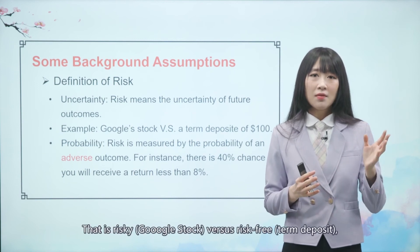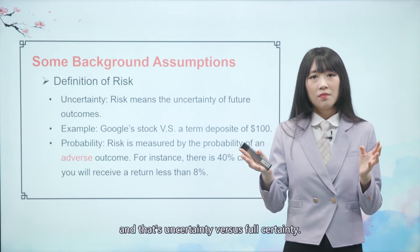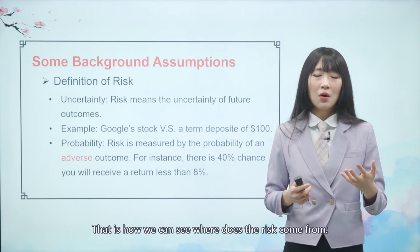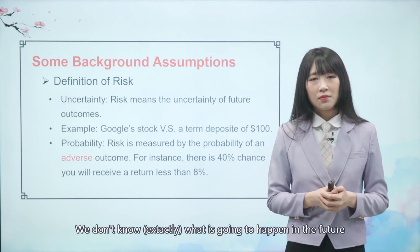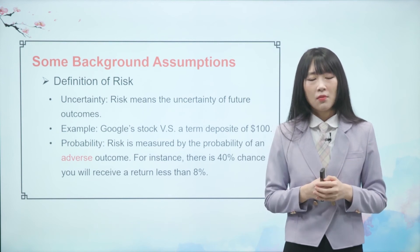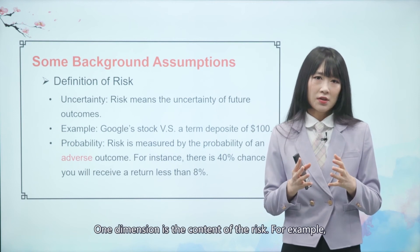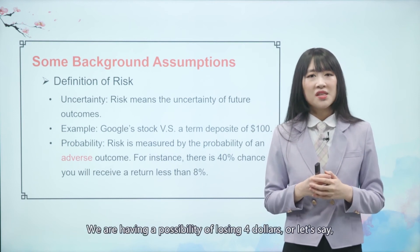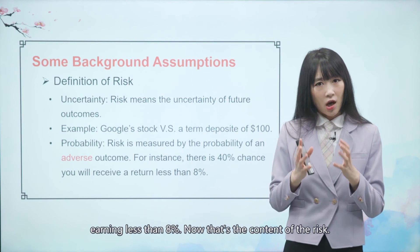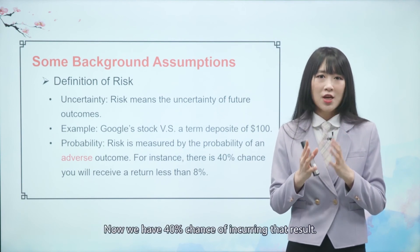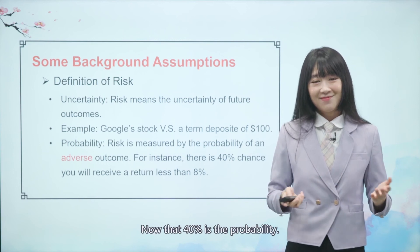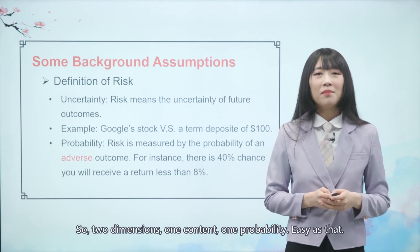That is risky versus risk-free — uncertainty versus full certainty. Risk actually has two dimensions. One dimension is the content of the risk: for example, a possibility of losing $4 or earning less than 8%. The other is the probability: for example, a 40% chance of incurring that result. So, two dimensions — content and probability. Easy as that.